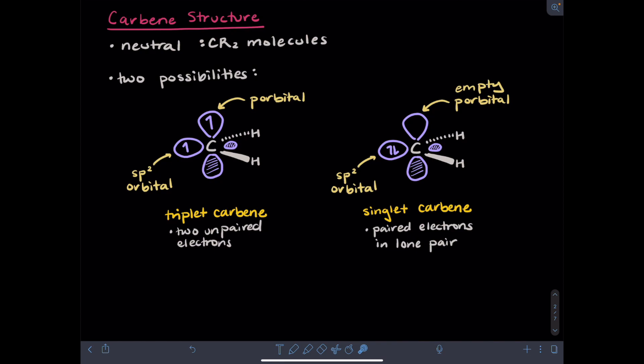A singlet carbene will have a different placement of electrons. For the singlet carbene, the electrons will be paired in an sp2 hybrid orbital in the plane of the molecule, and there will be an empty p orbital with lobes above and below the plane of the molecule.